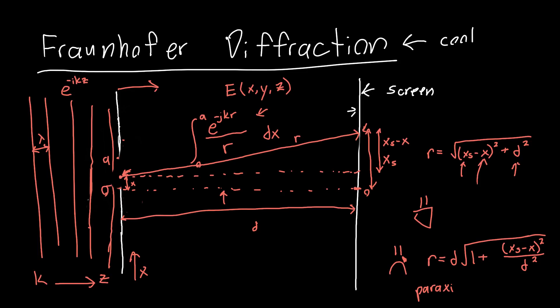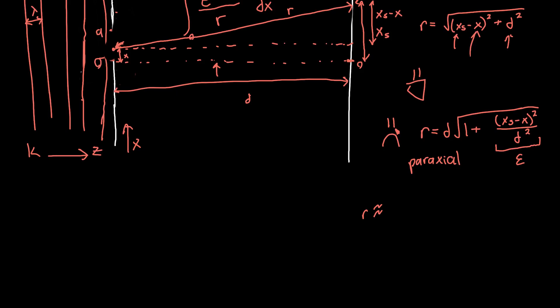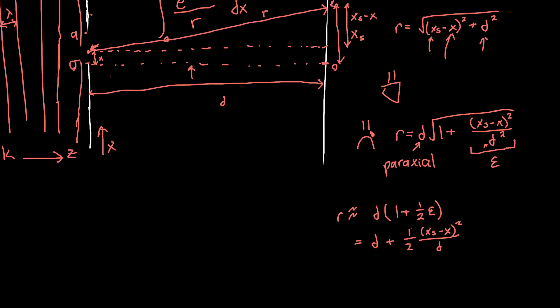And the first approximation we're going to make is called the paraxial approximation, also known as the small angle approximation, or equivalently that this term, this x_s minus x squared over d squared, this is small. So this is some small number epsilon. And so if we do that, we can Taylor series expand, we can Taylor series expand this square root, so that r is now just approximately d times 1 plus 1 half epsilon, that's just binomial expansion, which is just equal to d plus 1 half times this x_s minus x squared divided by d. And so the d out front canceled with one of the d's in this d squared term.